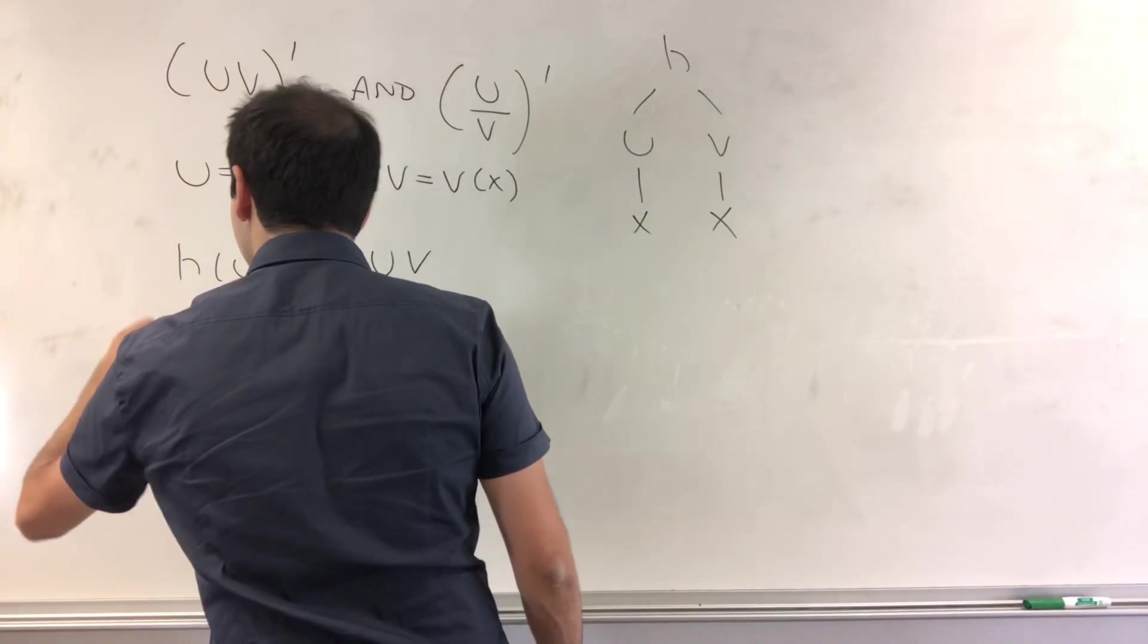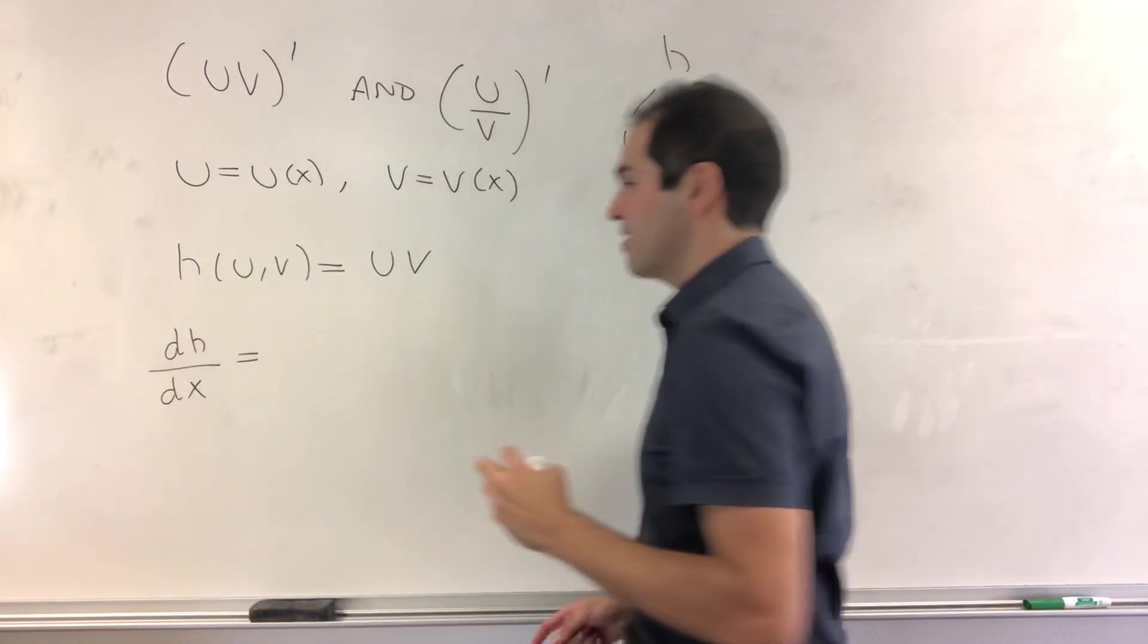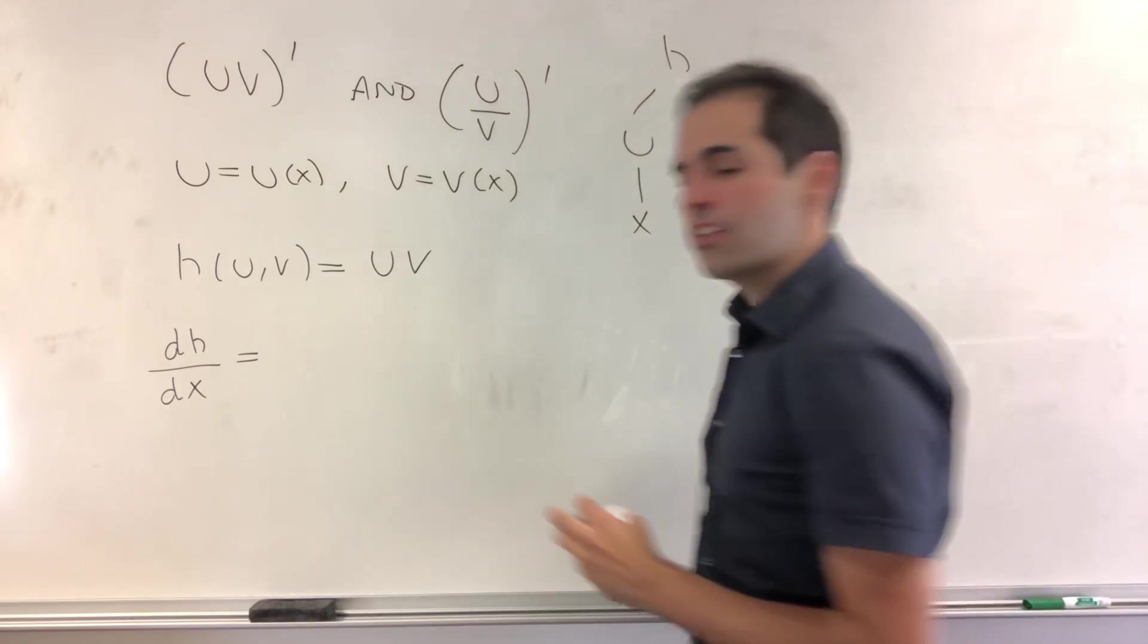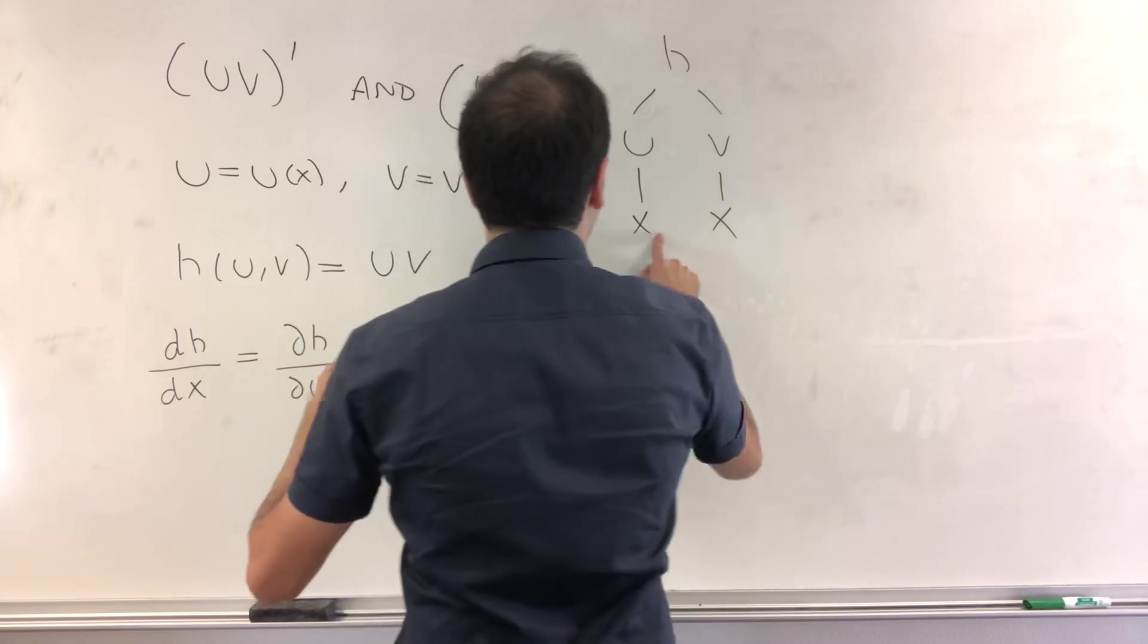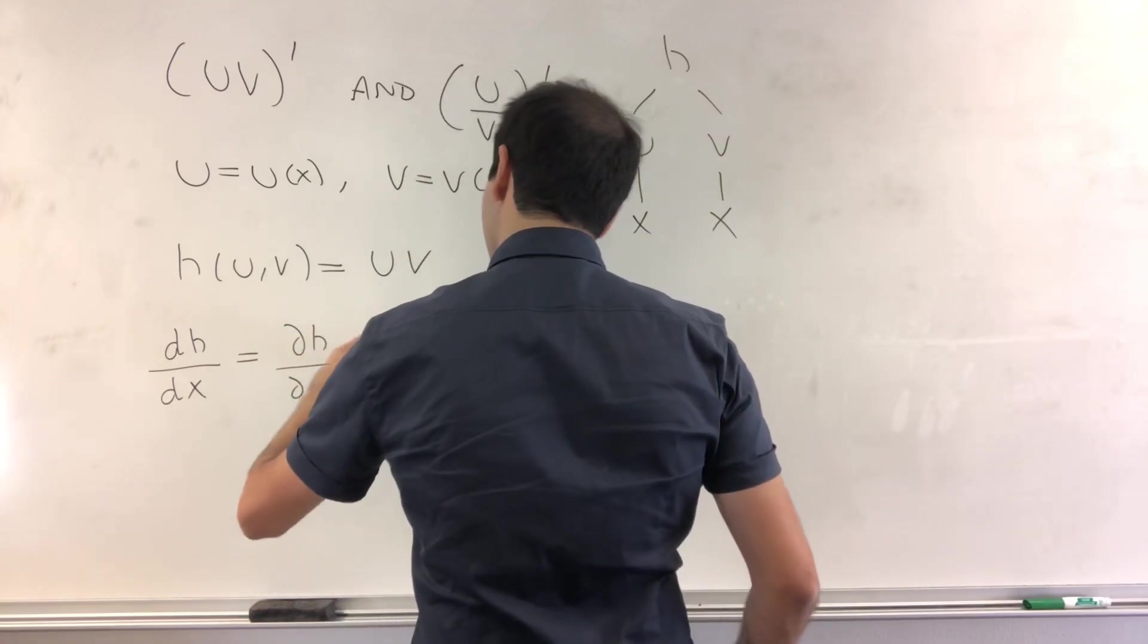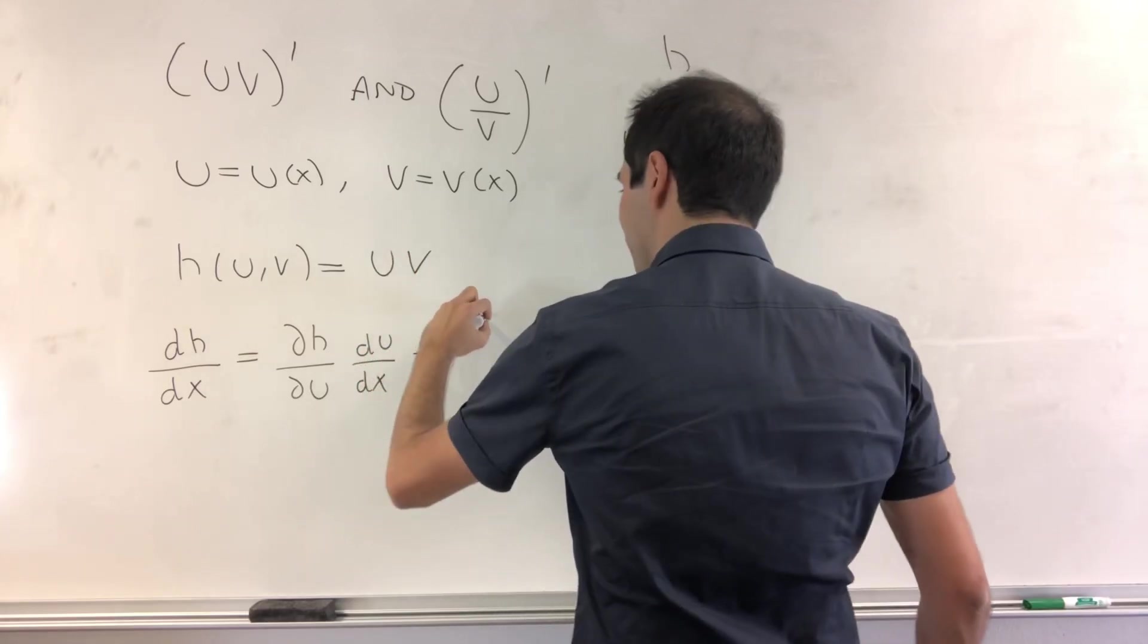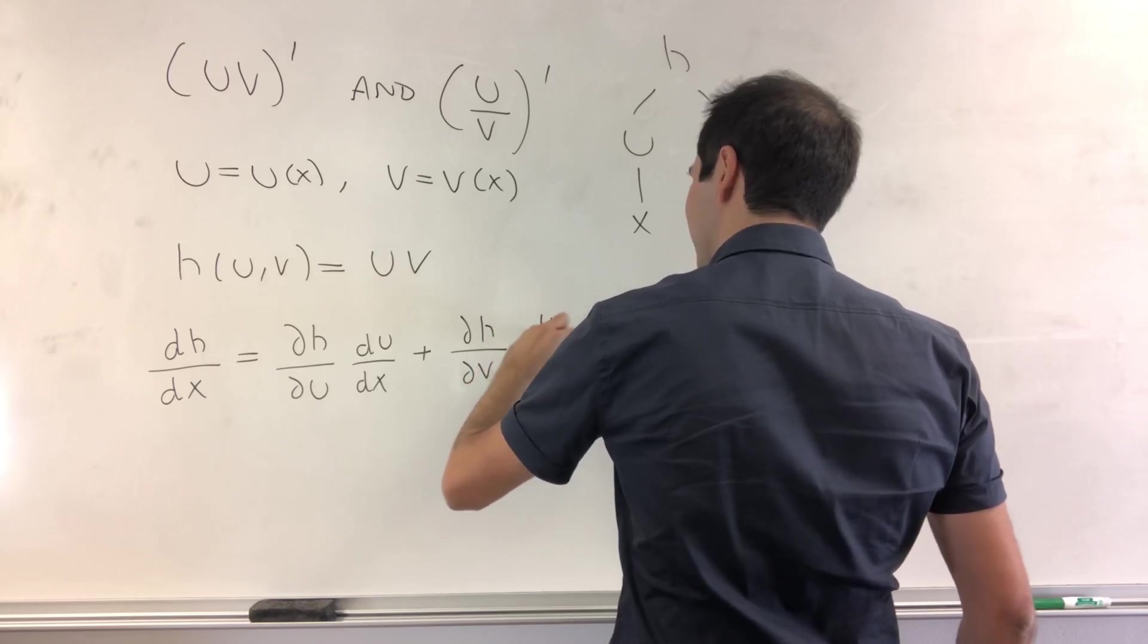It says that the derivative of h with respect to x is just the derivative of h with respect to u, dh over du times the derivative of u with respect to x plus the same thing with v, dh over dv times dv over dx.